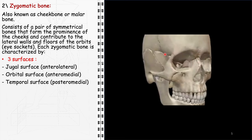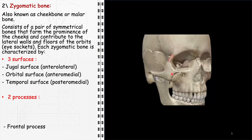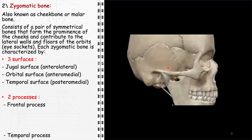In addition to these surfaces, the zygomatic bone exhibits two important processes: the frontal process, which extends upwards to articulate with the frontal bone, playing a significant role in the formation of the lateral rim of the orbit and the lateral wall of the frontal sinus; and the temporal process, which projects posteriorly and fuses with the zygomatic process of the temporal bone, forming the zygomatic arch.